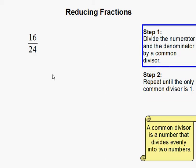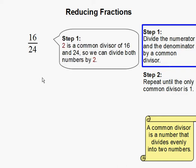Step 1. Divide the numerator and the denominator by a common divisor. So a common divisor is a number that can go into both the numerator and the denominator. 2 is a common divisor of 16 and 24, because 2 can go into both of these numbers. So we can divide both numbers by 2.